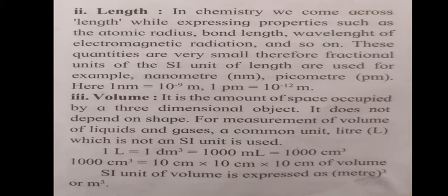The next property is volume. Volume is the amount of space occupied by a three-dimensional object. A three-dimensional object has length, width, and height. Volume does not depend solely on shape — it depends on all three dimensions.